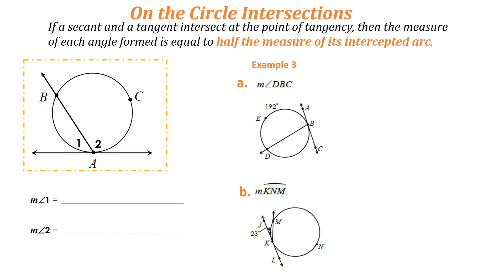Now let's look at intersections on the circle. If a secant and a tangent intersect at the point of tangency — which is point A here — then the measure of each angle formed is equal to half the measure of its intercepted arc. So the measure of angle 1 is equal to one-half the measure of arc AB.